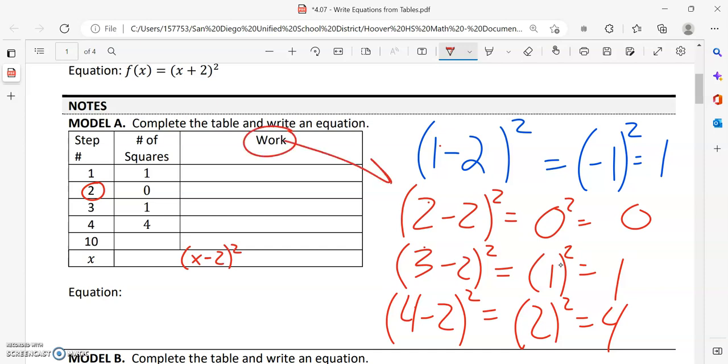So here, this work is basically what's over here. I'm not going to write this in this box. For 10, so we're going to get 10 minus two, which is equal to eight squared, and eight squared is equal to 64. And the equation is the exact same thing we have up here.